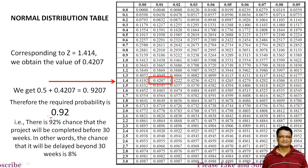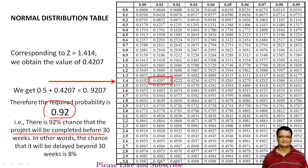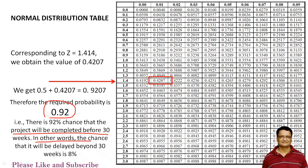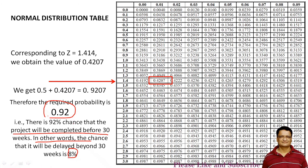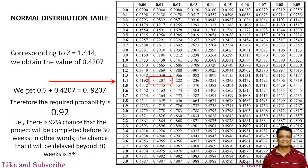So 0.92 is the probability that the project will be completed within 30 weeks. In other words, there is an 8% chance — that is, 100 minus 92 — that it will be delayed beyond 30 weeks. In this way, we can compute the probability of completing the project within the stipulated time.